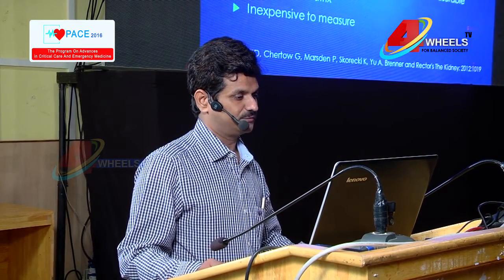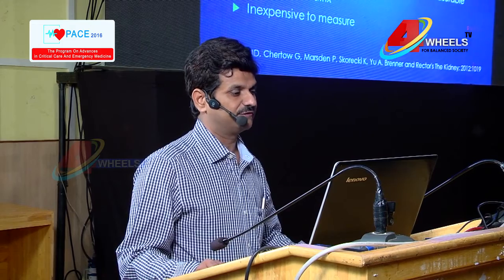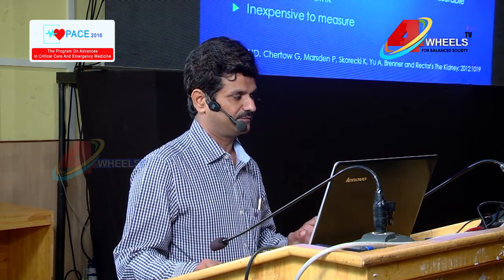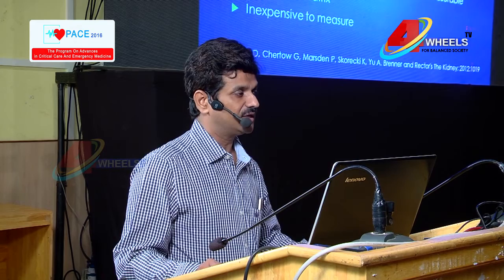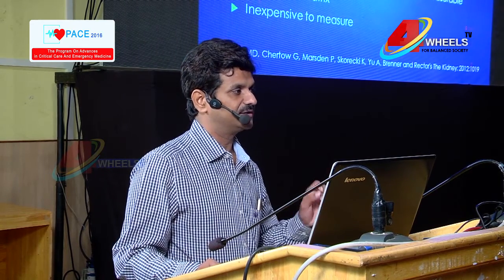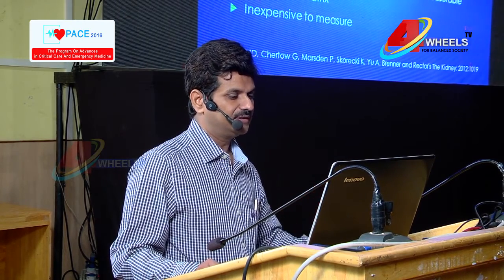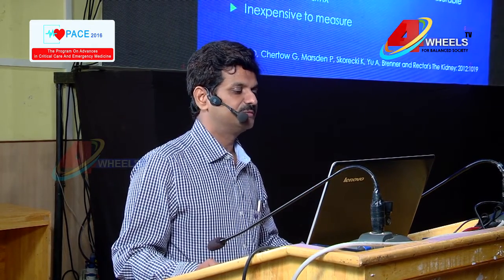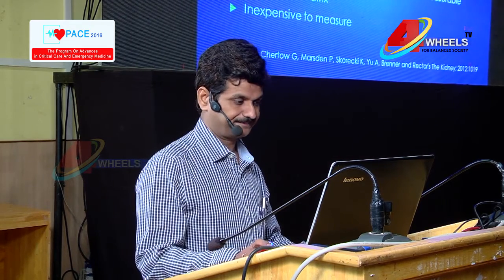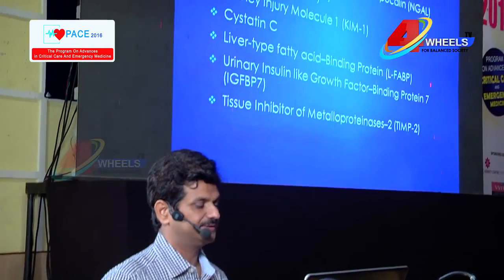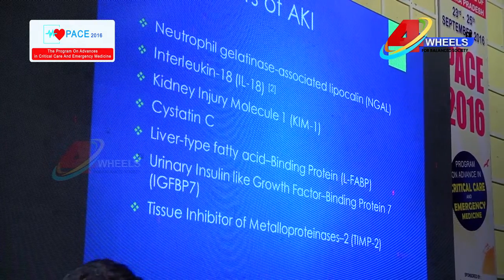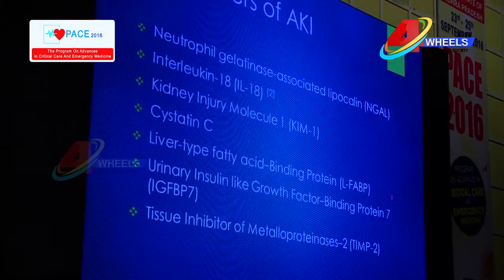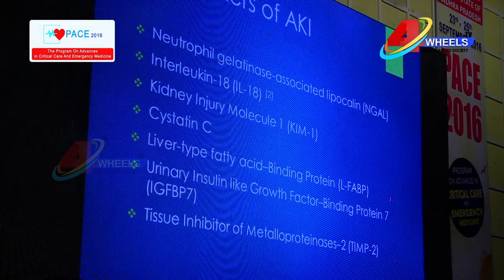An ideal biomarker should be kidney-specific, differentiate pre-renal, intrinsic, and post-renal disease, detect AKI early, identify the cause and localize the site of injury, provide pathological information, and be easily, reliably, and promptly measurable in a non-invasive manner — stable in the matrix and inexpensive. We may not get such an ideal biomarker even in the near future. There are more than 300 biomarkers, but I would like to focus on a few important ones.